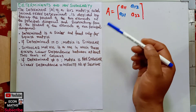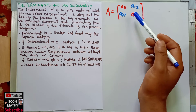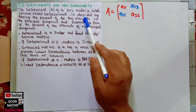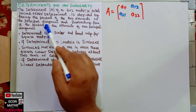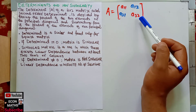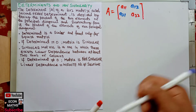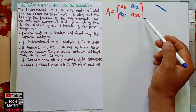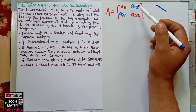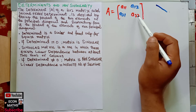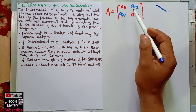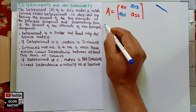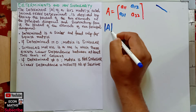The determinant of a 2 by 2 matrix is derived by taking the product of the two elements on the principal diagonal — the diagonal going from top-left to bottom-right — and subtracting from it the product of the elements on the non-principal diagonal.